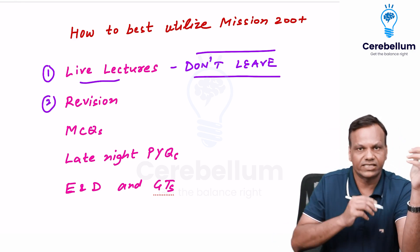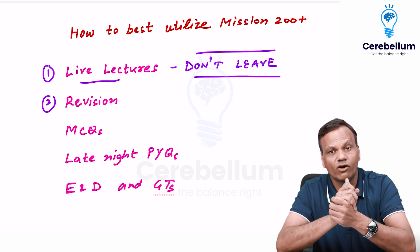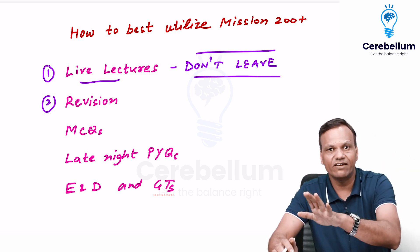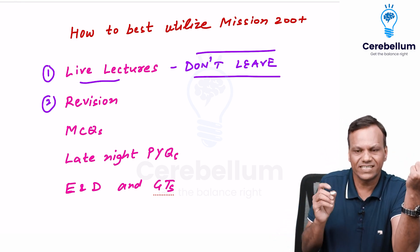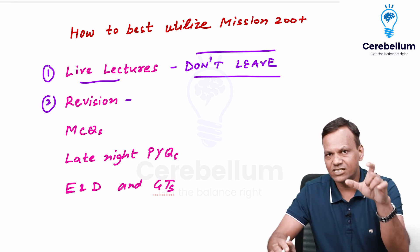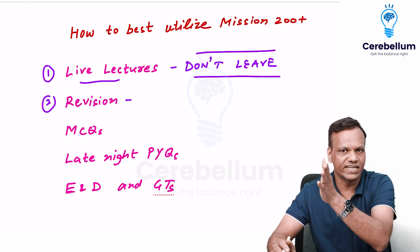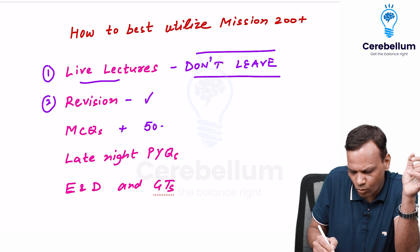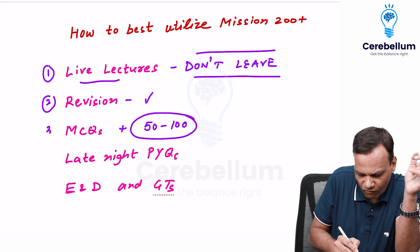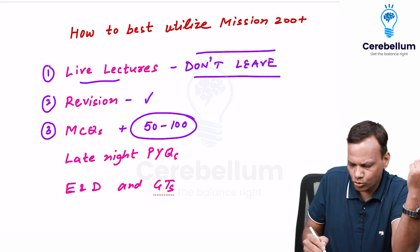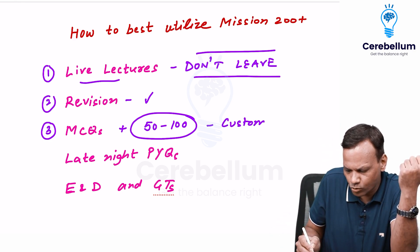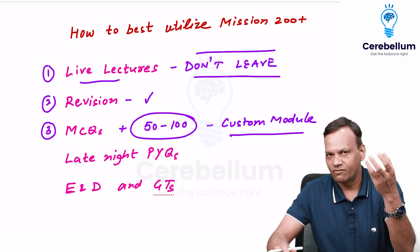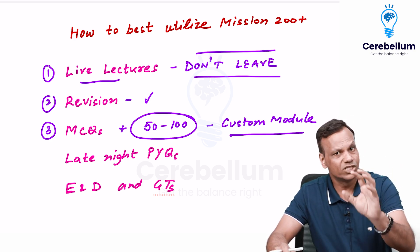Second, after attending the live lecture — which runs from 5 to 10 or 11 p.m. — what do you do for the rest of the time? From 11 p.m. to the next day 5 p.m. you have a lot of time. Number one: revise whatever has been taught in those five hours. Before the start of the next class, you must revise what was taught and solve a minimum of 50 to 100 MCQs. On the Cerebellum app you can make custom modules from whichever chapters were taught that day and do 50 to 100 MCQs.